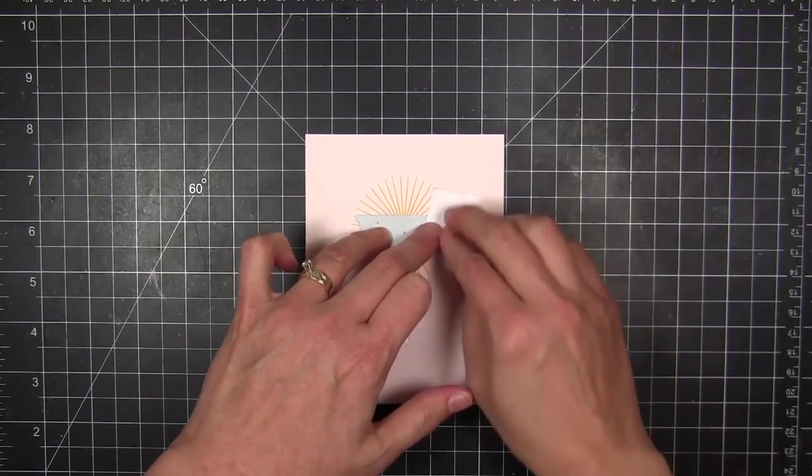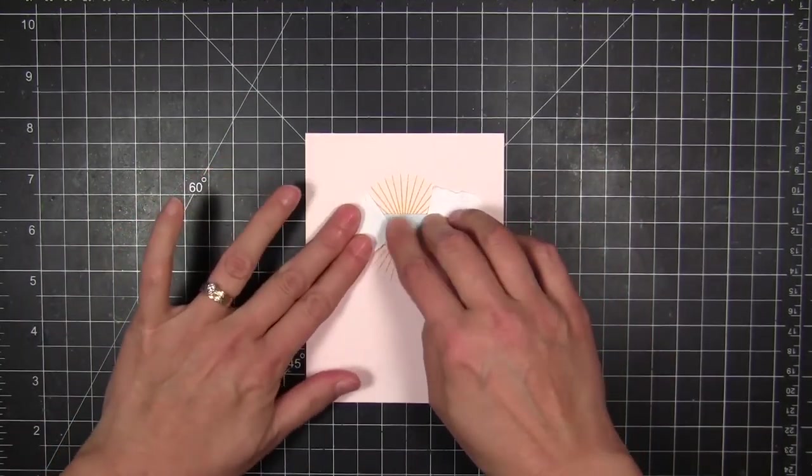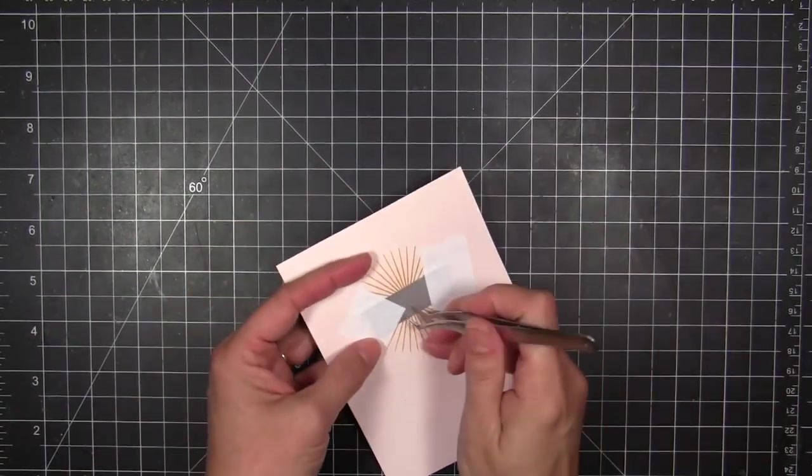I'm going to go ahead and place the totally die right over the top, hold it in place with some post-it tape, and send it through my big shot. So I'm die cutting right through this stamped image. And then I'm going to go ahead and pop the die off.